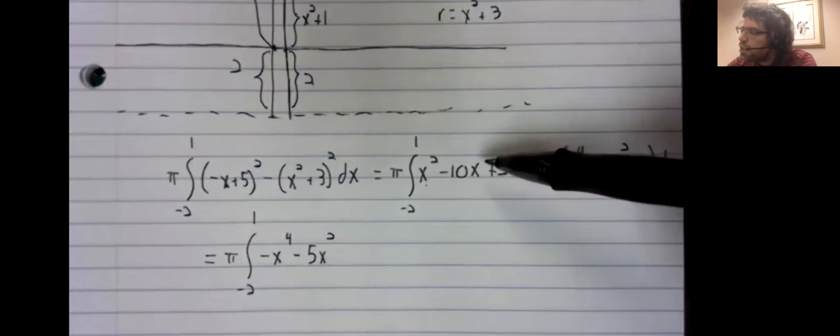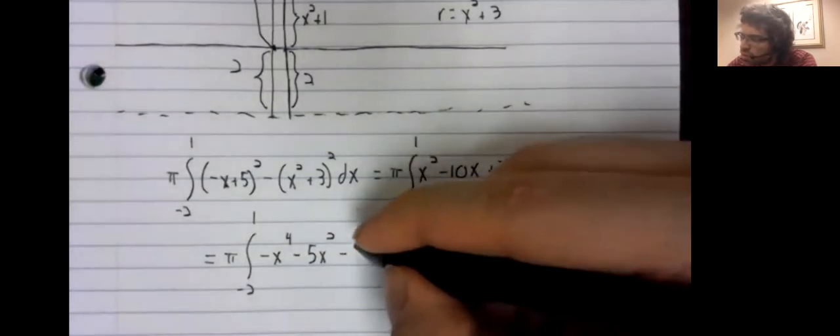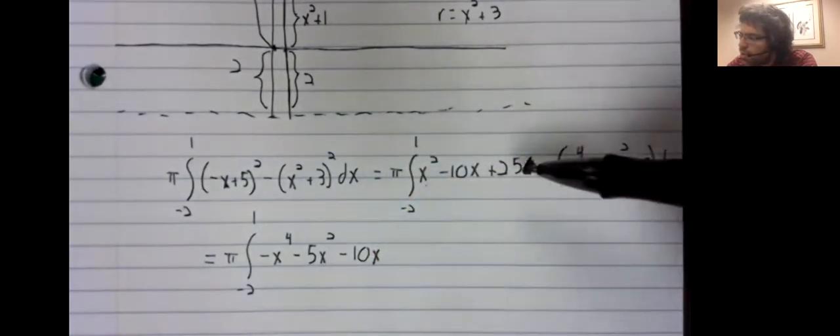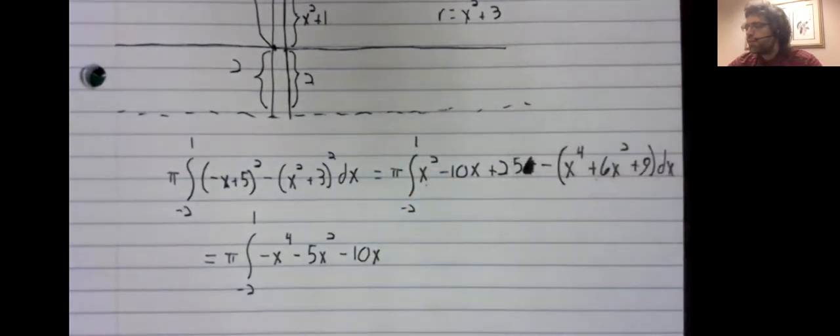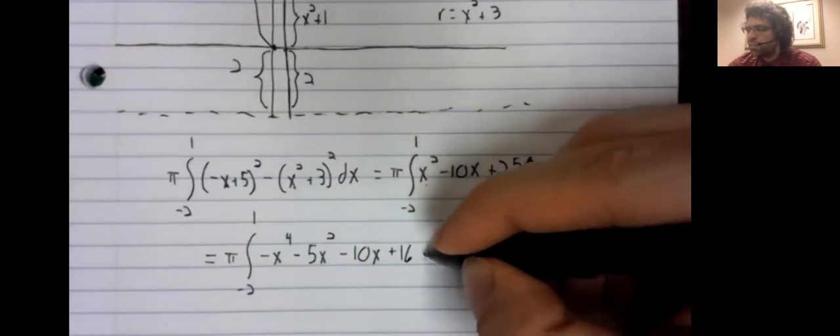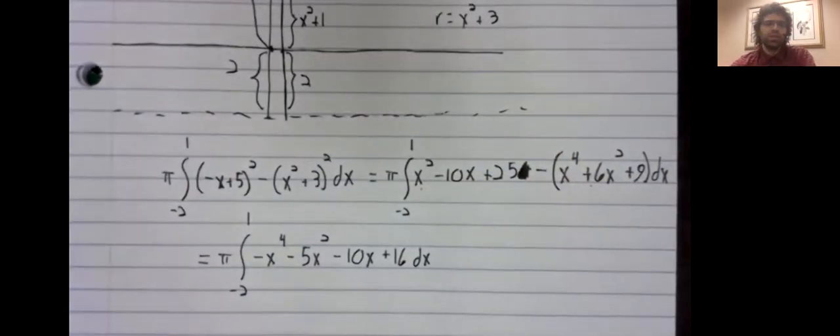Negative x squared. Negative x to the fourth, x squared. There should be our integral.